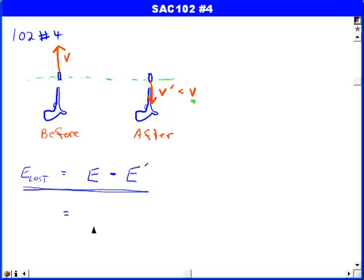So now we do the substitutions. The initial energy is the sum of kinetic energy plus potential energy. Same goes for the final energy.